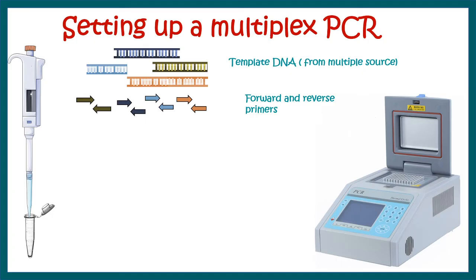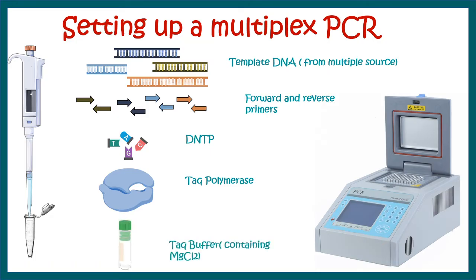Here there would be several forward primers and several reverse primers, each dedicated to one specific target. Then dNTPs would be common, Taq polymerase and MgCl2-containing buffer would be necessary, just like any other PCR reaction.